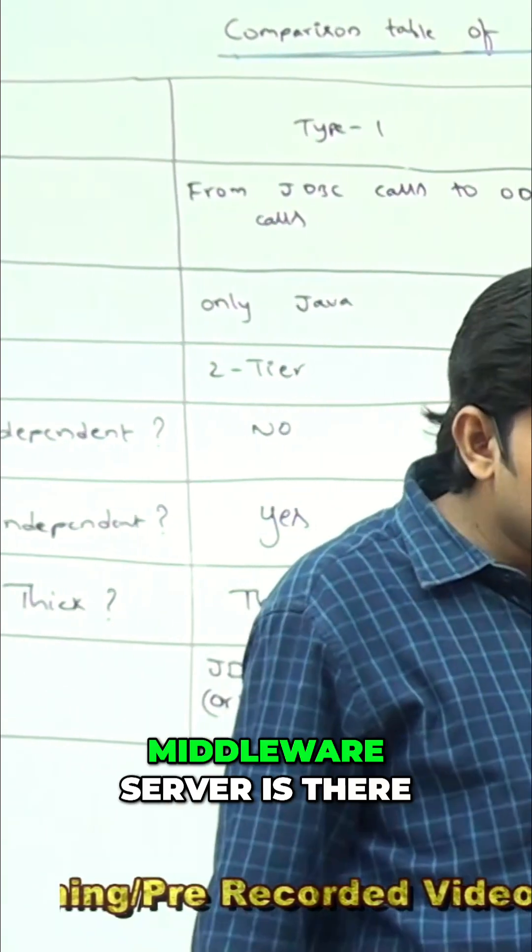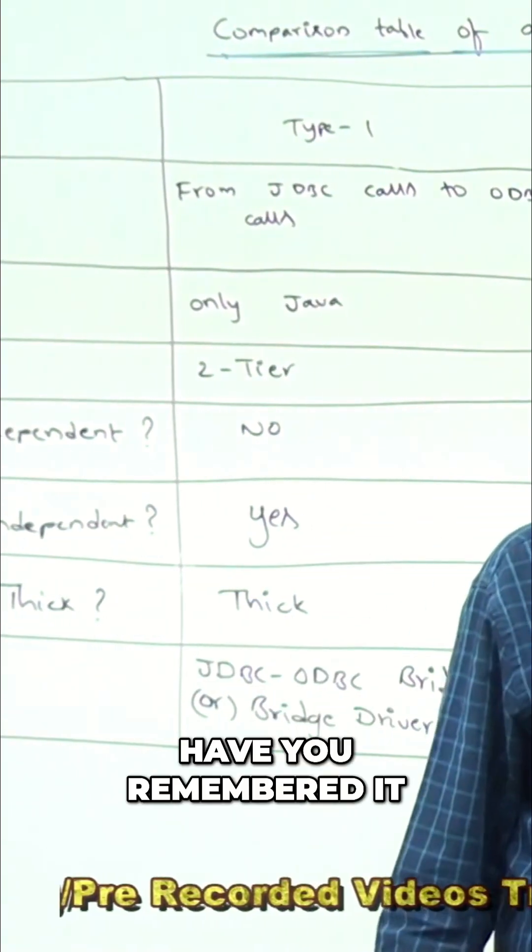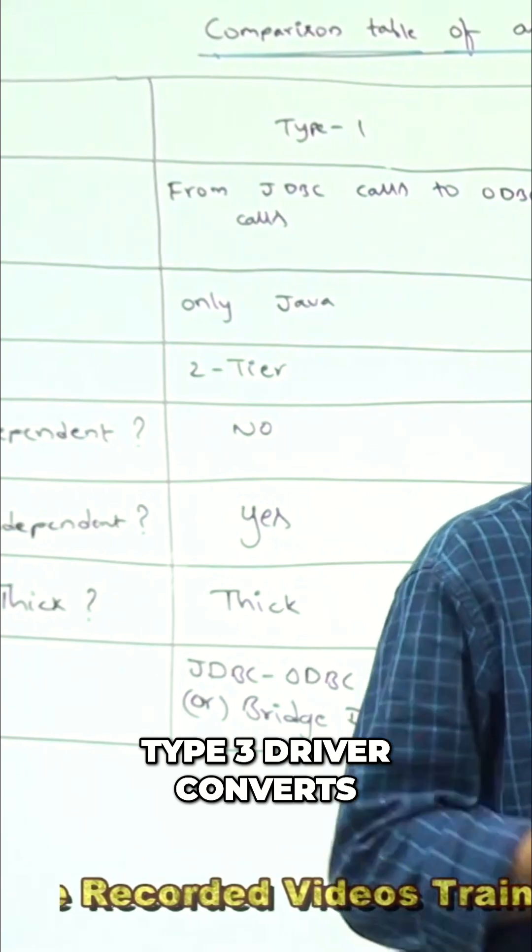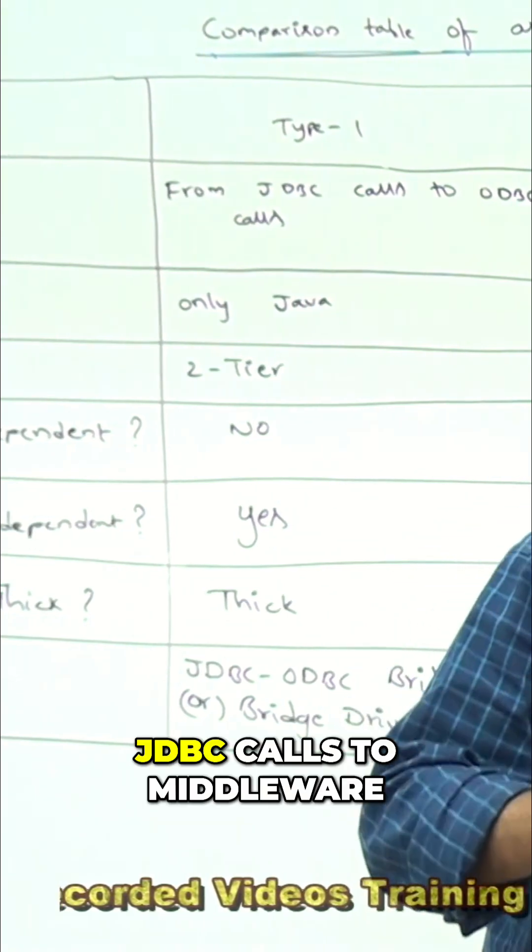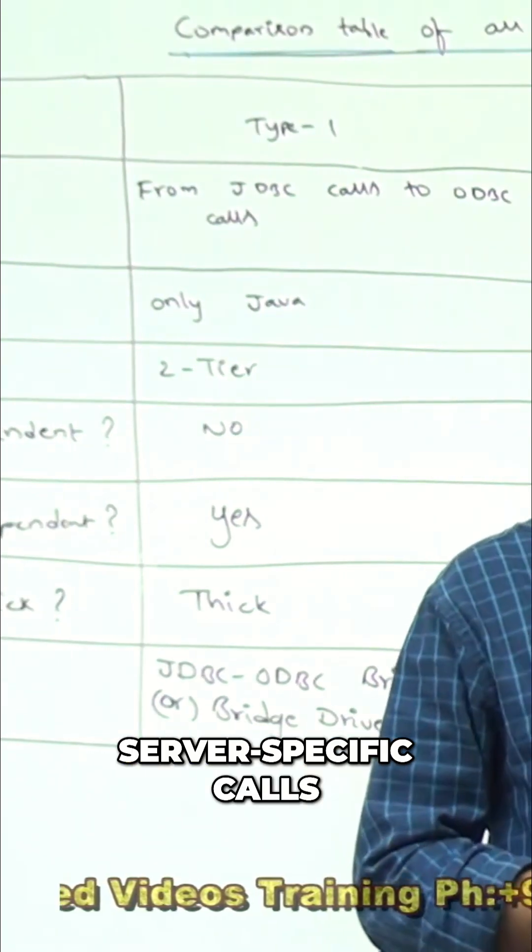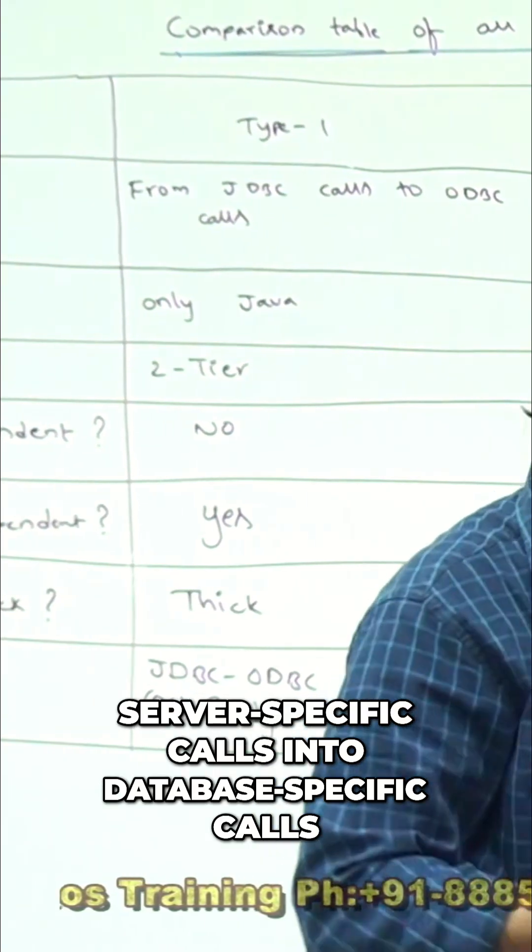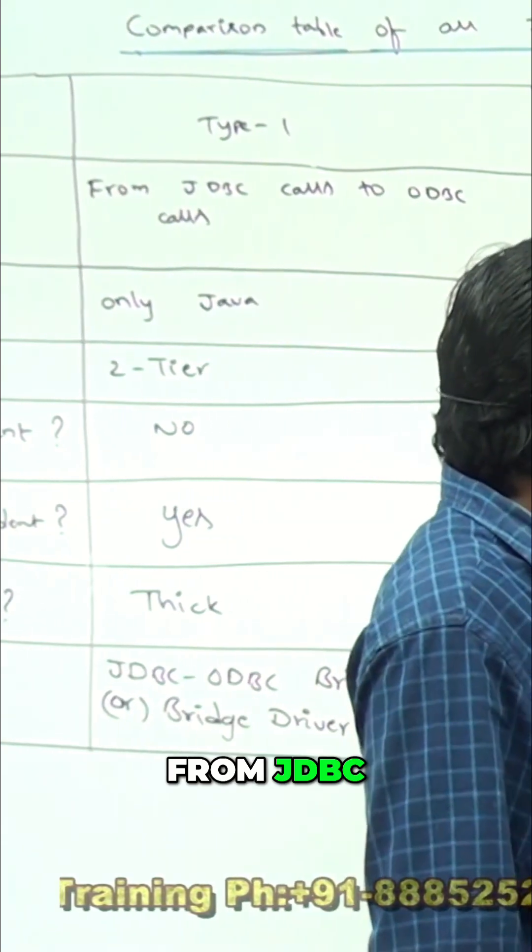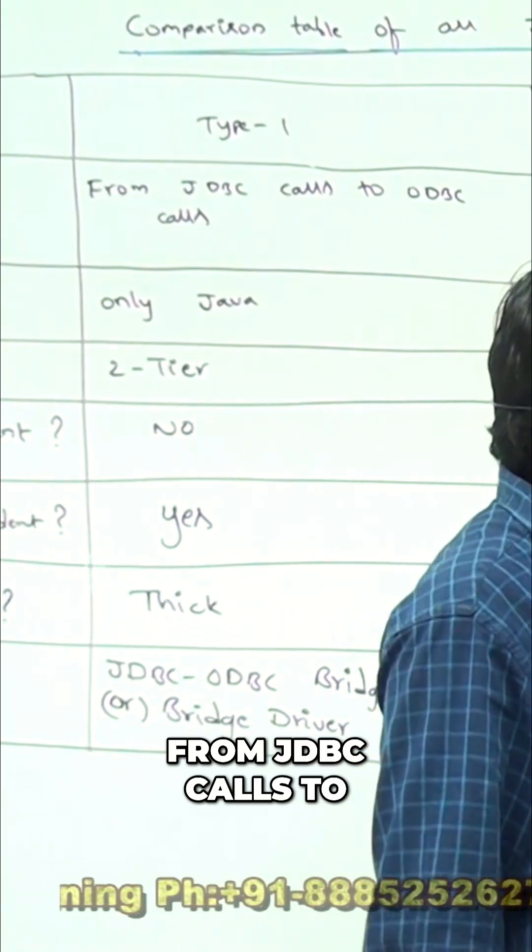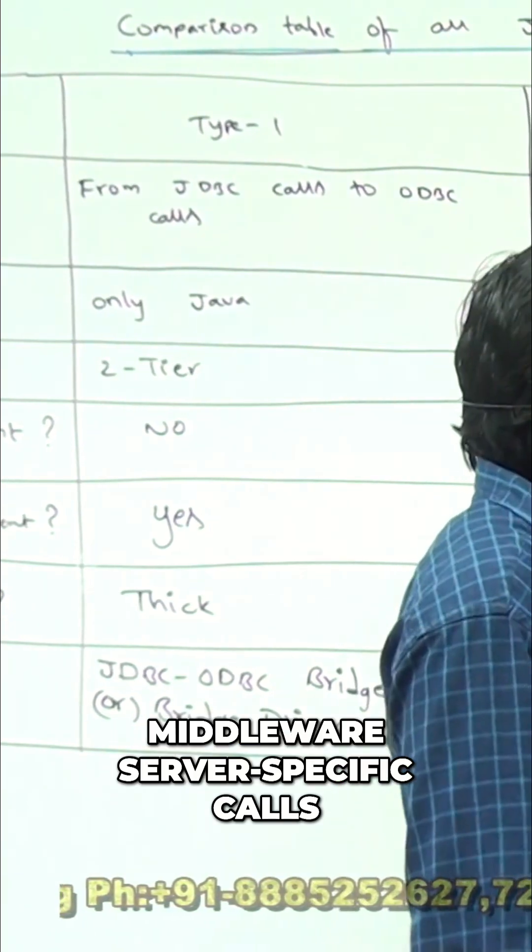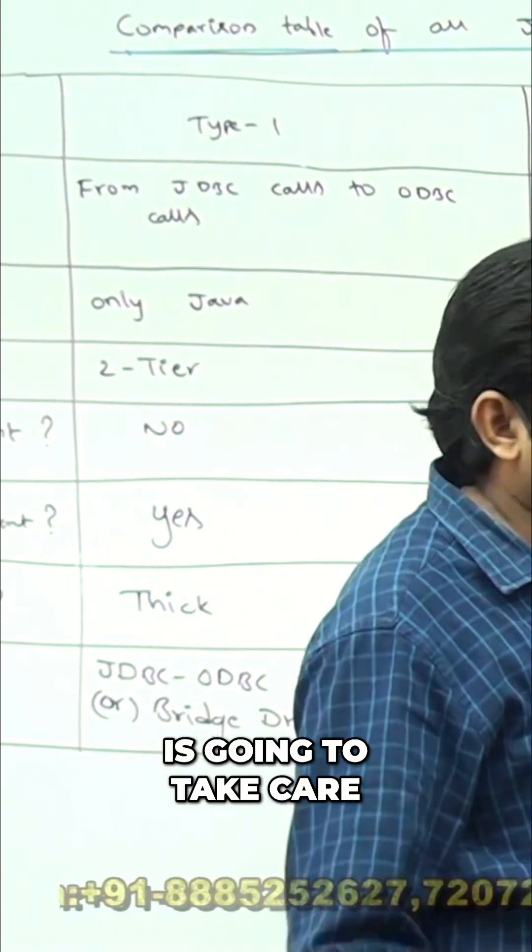Type 3 driver means middleware server is there in the middle. Have you remembered? Type 3 driver converts JDBC calls to middleware server specific calls. Middleware server converts middleware server specific calls into database specific calls. Have you observed? From JDBC calls to middleware server specific calls, type 3 driver is going to take care.